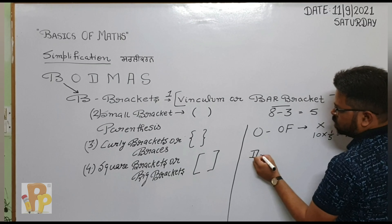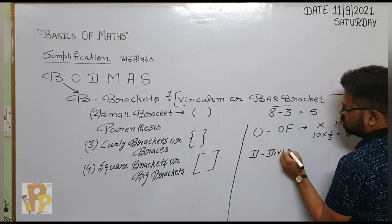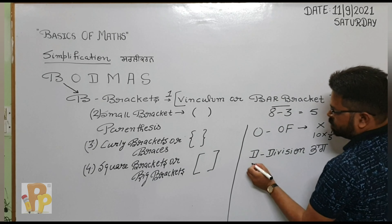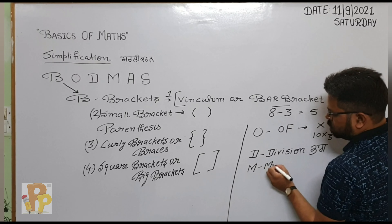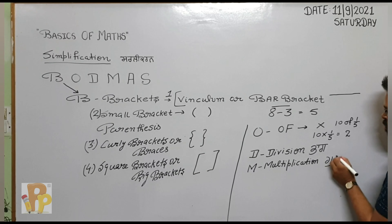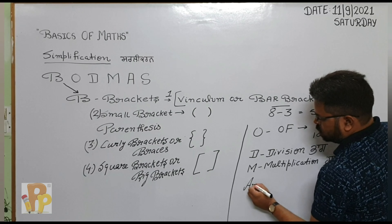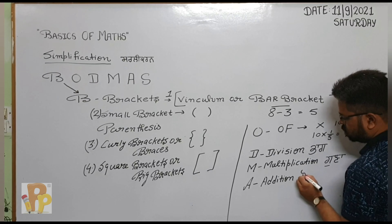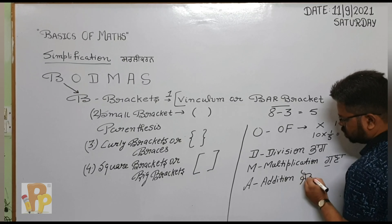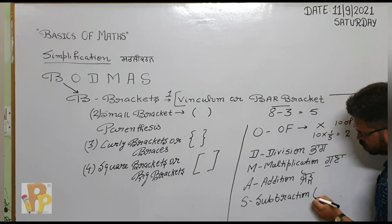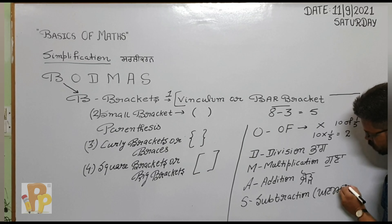D से आपका division है — that means bhag. Then M से multiplication — that is also called guna. Then A से addition — that is called jod. And S से subtraction — that is called minus or cutout.